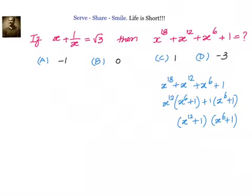Let us go back to our condition x plus 1 by x equal to root 3 and see if we can get a value of x power 6 plus 1 or x power 12 plus 1 from what we know. We will write down x plus 1 by x equal to root 3. The approach can be two ways: one you can square it on both sides, or you can cube it on both sides.